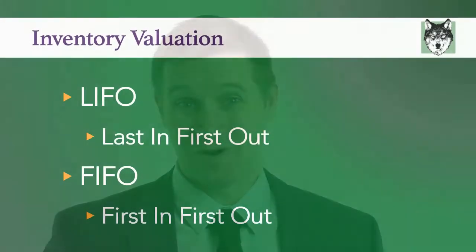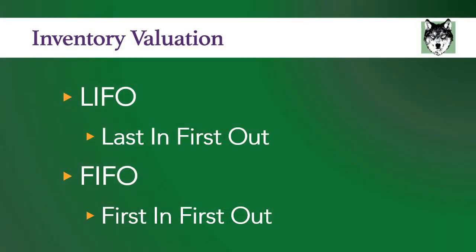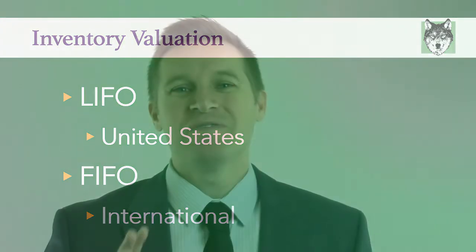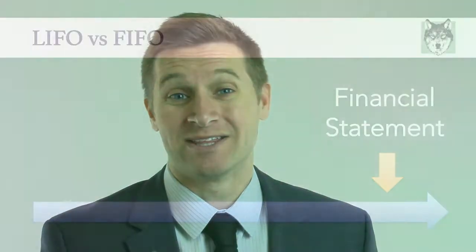So what is LIFO and FIFO? LIFO stands for last in first out and FIFO stands for first in first out. These are the most common methods of inventory valuation. There are actually many more methods, but these are the most common. LIFO is only allowed in the United States because GAAP accounting standards allow LIFO, whereas international accounting standards do not.